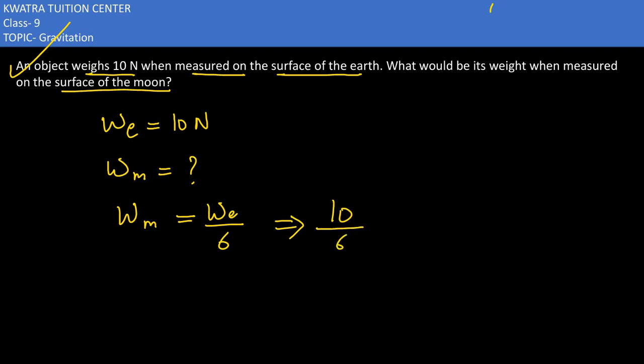So 10 times 5 by 6, the value for this would be 5 by 3 which is 1.67 newton. So that is weight on the surface of the moon, 1.67 newton.